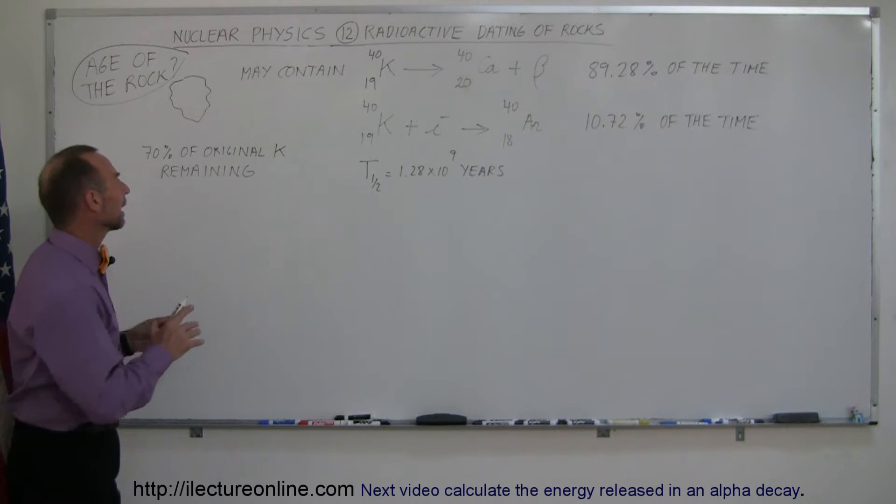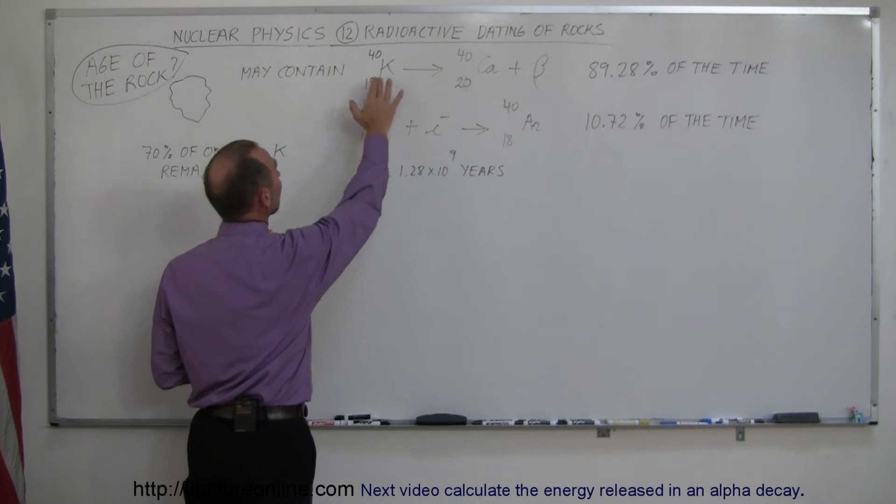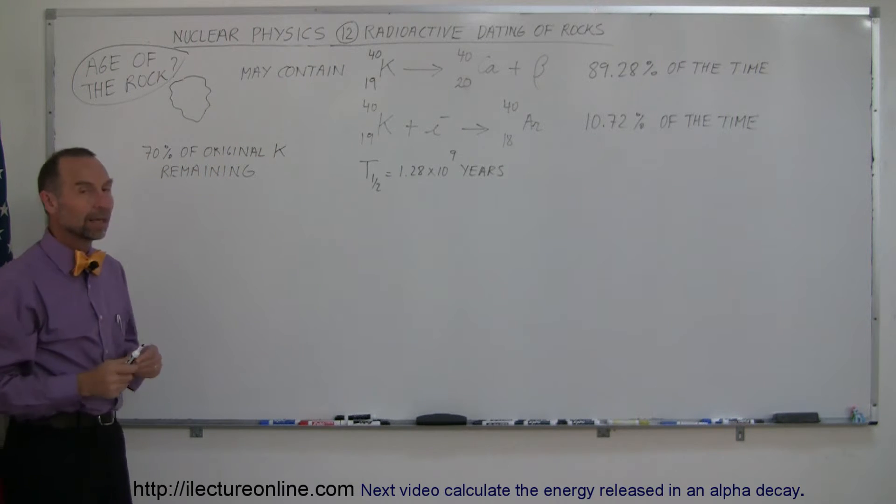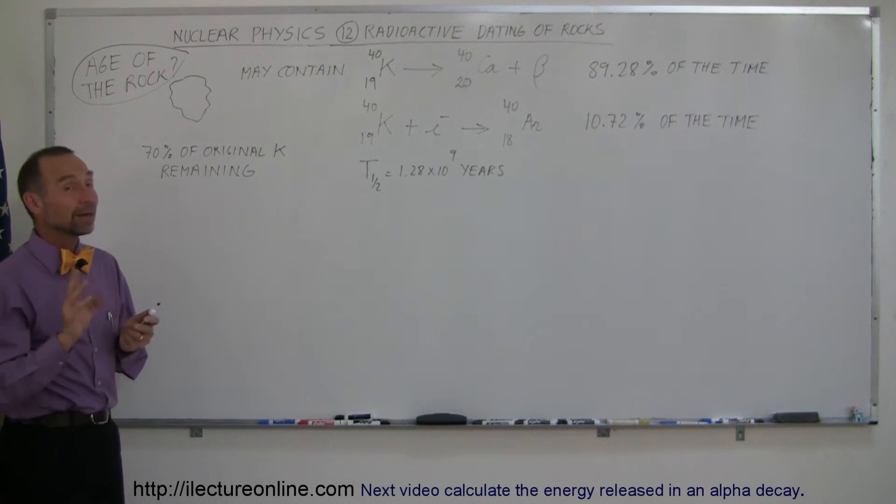Let's say for example that we find a rock and we determine that it contains potassium-40, which is a radioactive form or isotope of potassium. Now potassium-40 can decay in two ways, actually in three ways, but primarily in two ways.